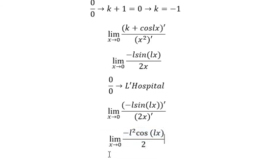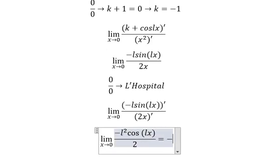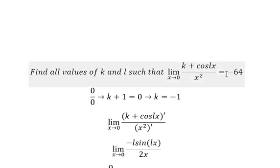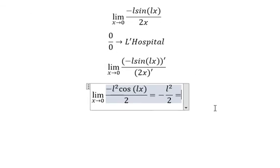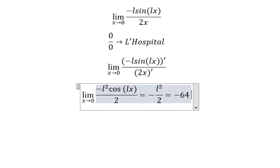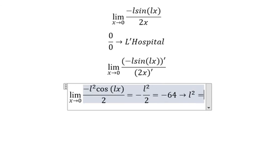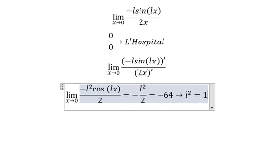Now we can put number 0 in here and we will get about negative l² over 2. This number equals negative 64, so we can find the value of l² that's equal to 128.